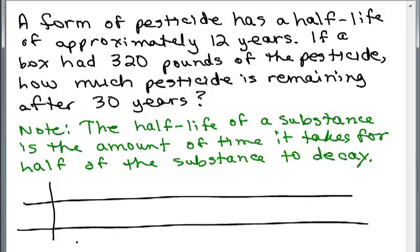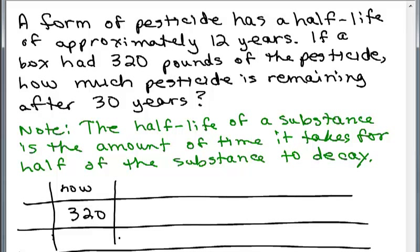So what does this mean? We're starting off at the beginning, no time has gone by, so now, right? And we have 320 pounds of pesticide. Then in 12 years, it's got half of that, so that would be 160 pounds of pesticide. And then in another 12 years, so in 24 years, it would have half of that. You'd have 80 pounds.